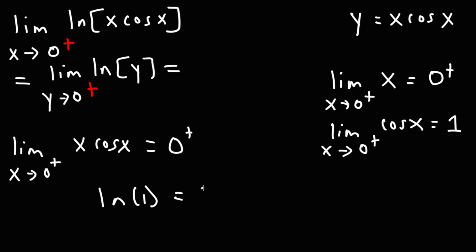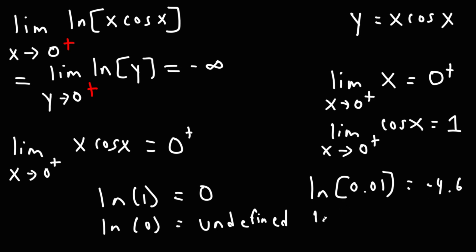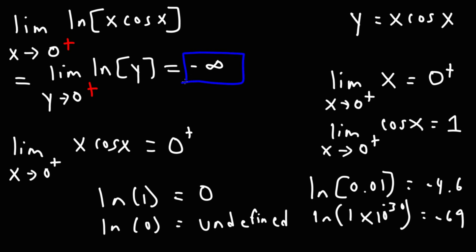We know that ln 1 is equal to 0, and ln 0 does not exist — it's undefined. But as we approach 0 from the right, this is going to be negative infinity. If you type ln of a small number just above 0 into your calculator: ln(0.01) gives about negative 4.6, and ln(1 × 10⁻³⁰) gives negative 69. So as you get closer and closer to 0, it becomes more negative. The final answer is negative infinity.